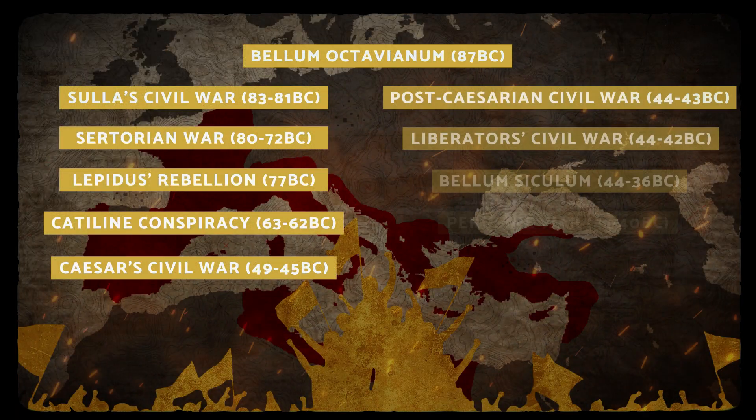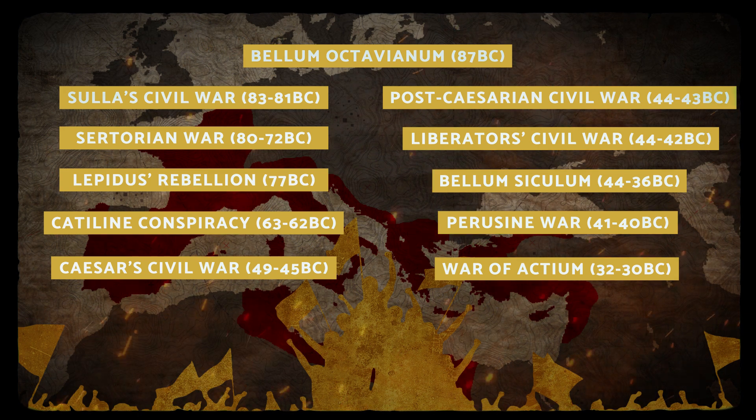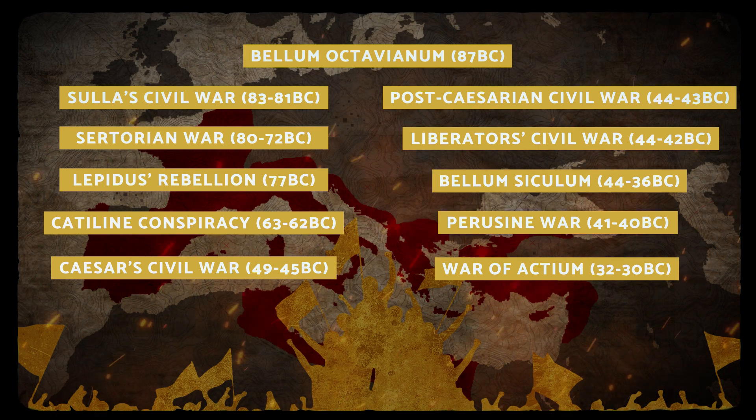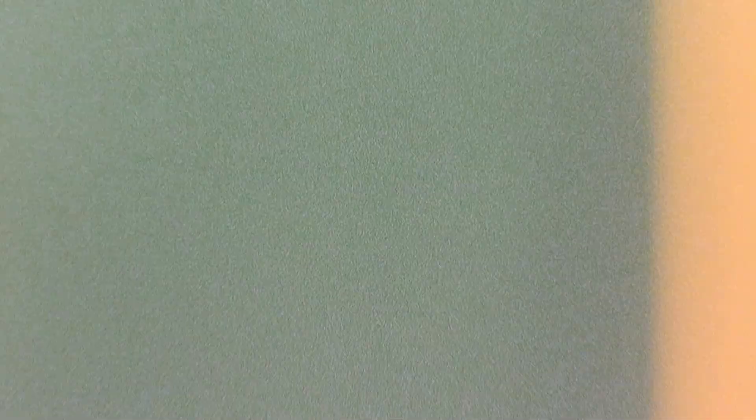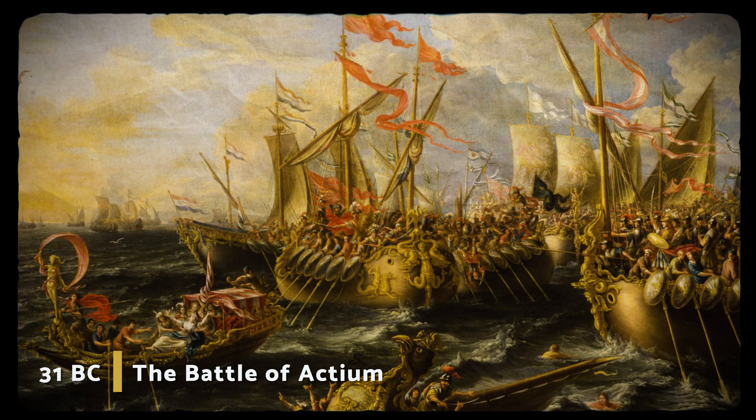And in the last 60 years of the Republic, no less than 10 civil wars were fought, plunging Rome into a vicious cycle of political chaos that only ended with the victory of Octavian at the Battle of Actium.